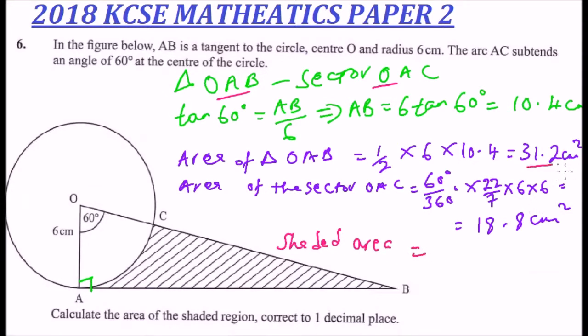The area of the triangle is 31.2, you minus the area of the sector, which is 18.8, and when you subtract that, you should get 12.4 centimeters squared. So that is the area of the shaded region.